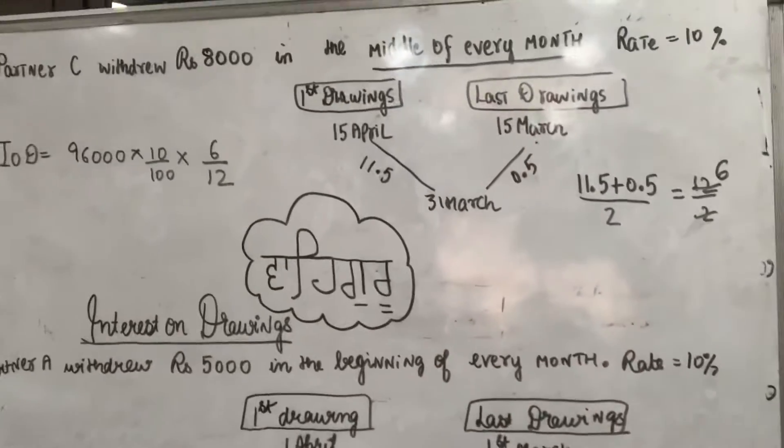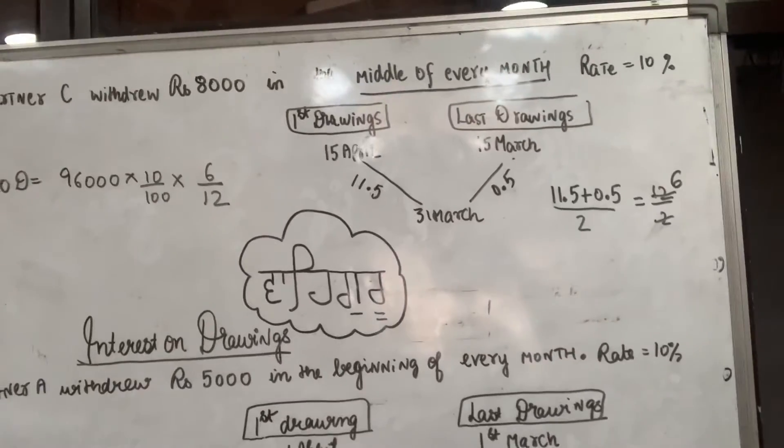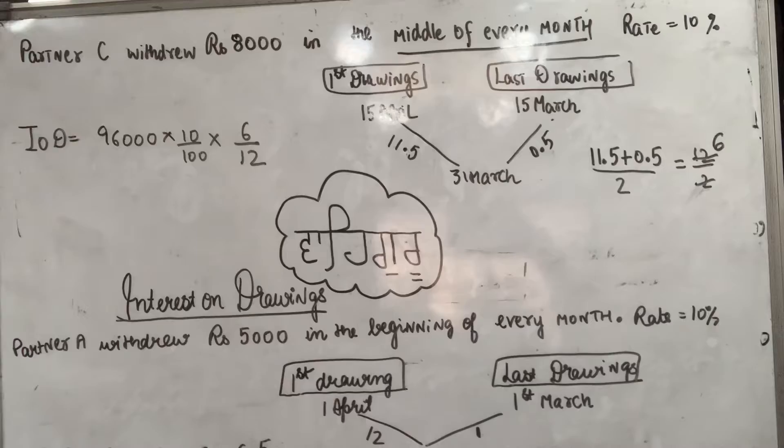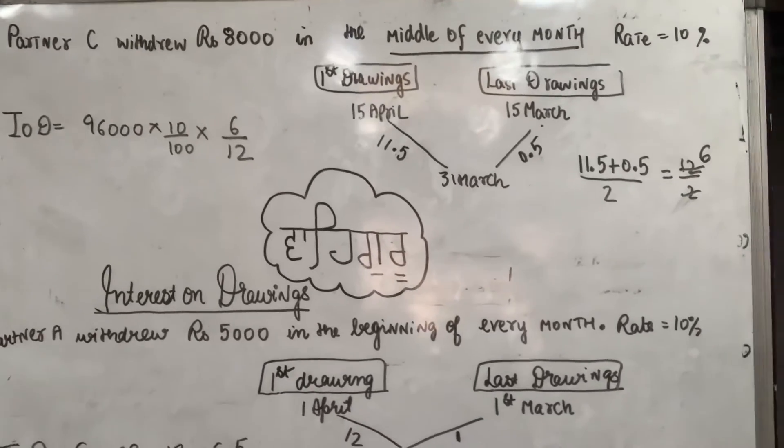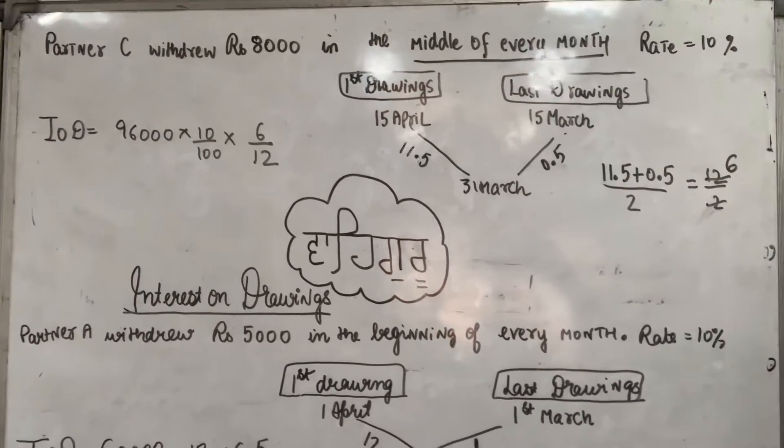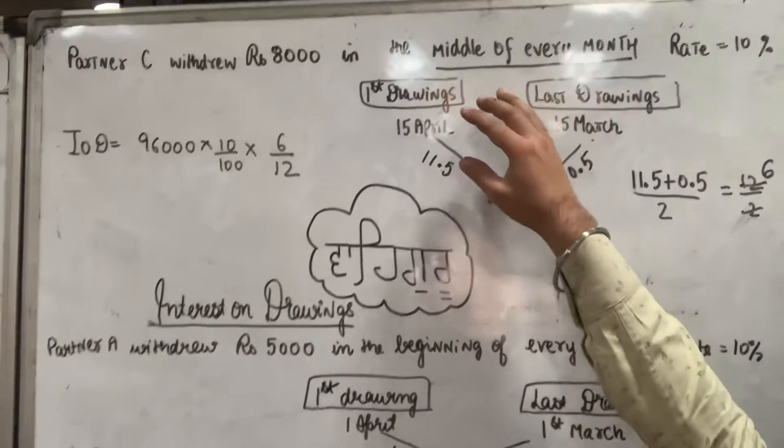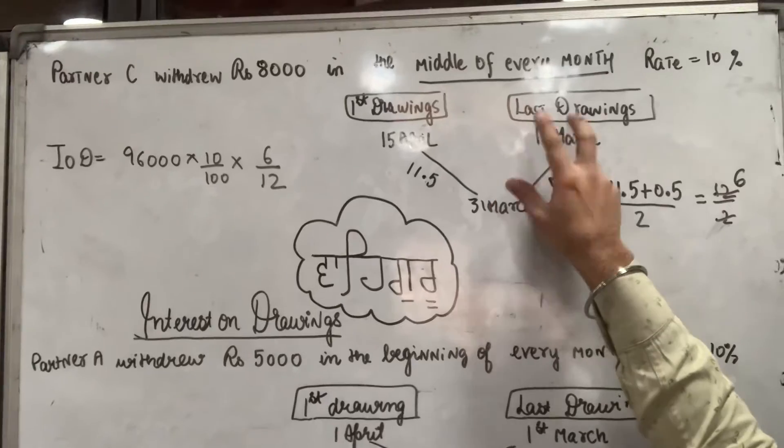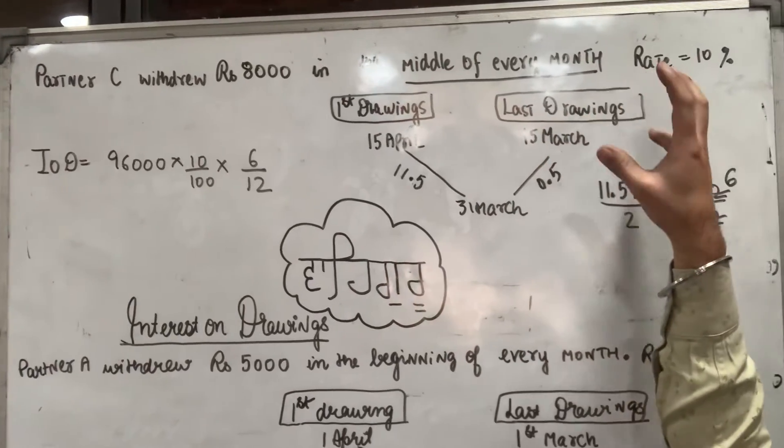Case 3 dekh lijiye. Case 3 mein hamare paas Partner C withdrew rupees 8000 in the middle of every month, rate of drawings 10%. Middle of every month matlab first drawing kab hogi humare paas? 15th April ko. Or last drawing kab hogi? 15th March ko.